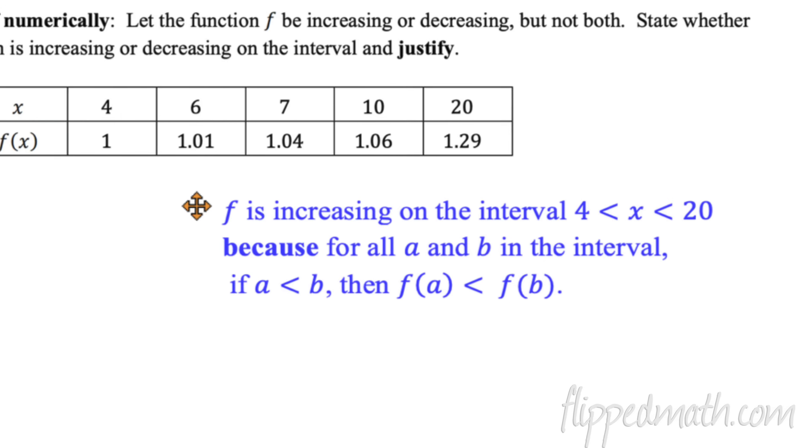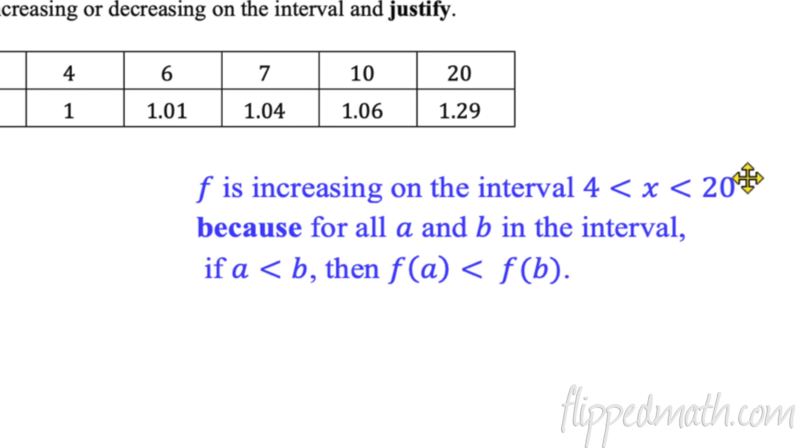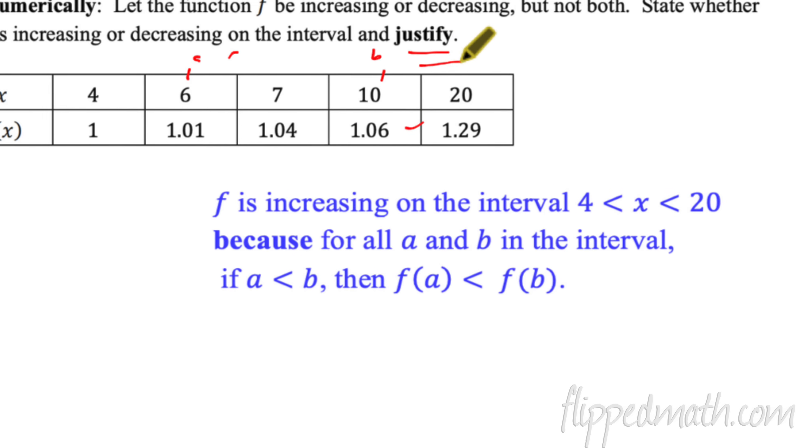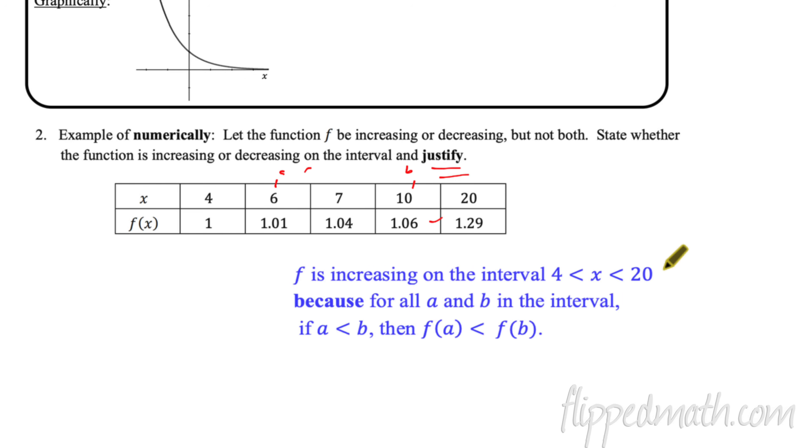Okay, so how would we write that? Well, justifying kind of looks like this. We would say the f is increasing on the interval from 4 to 20. And this is how we write it using inequality notation. We put the lower bound and the upper bound, X is in the middle. And we're saying the X has to be greater than the lower bound but less than the upper bound. It is increasing on that interval because for all a and b in the interval, and we're talking about the input values, if a is less than b, then f of a is less than f of b. Meaning you can pick any two values here. We'll pick this one, we'll pick this one. If this is a and this is b, and it says if a is less than b, which it is, then f of a is less than f of b, which is true. That is a justification using technical language that we're going to have to learn how to do throughout this course.